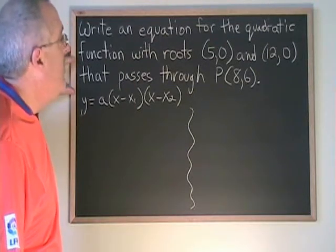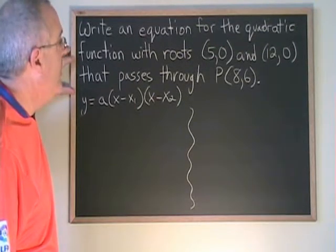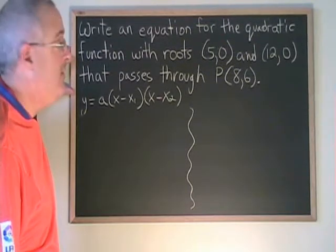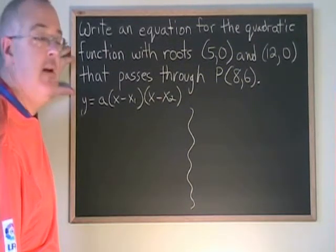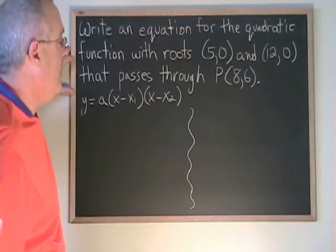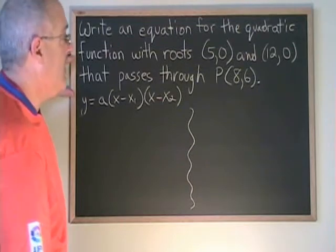In this question, we are asked to write an equation for the quadratic function with roots (5,0) and (12,0) that passes through the point P(8,6). We have to take this form of our equation and plug in.